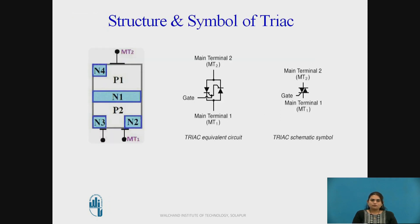This is the structure and symbol of TRIAC. In the first diagram we can see the structure of TRIAC. During the four modes of operation, different structures conduct: P1 N1 P2 N2, P1 N1 P2 N3, and P1 N1 P2 N4. In the second diagram we can see the TRIAC equivalent circuit, in which two SCRs are connected in anti-parallel and their gates are connected together. It has two terminals, MT1 and MT2. The symbol of the TRIAC shows the two SCRs connected in anti-parallel with the two terminals MT1 and MT2.